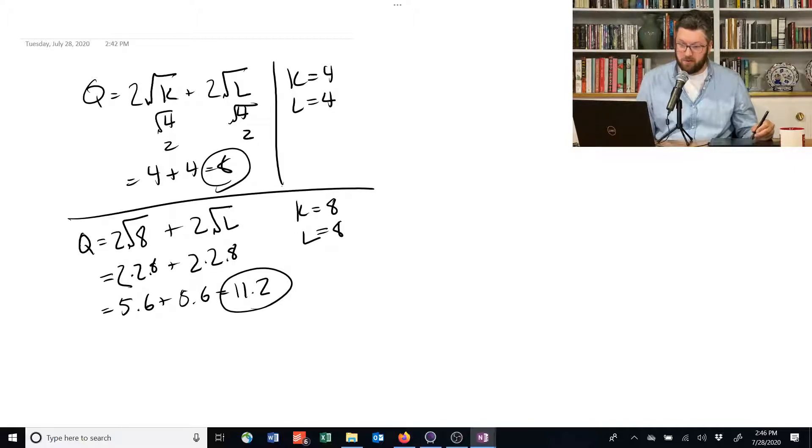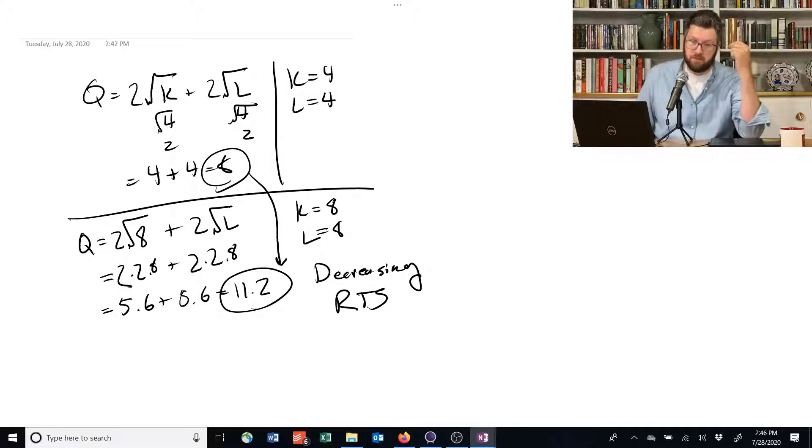The important point is that we doubled the inputs, so we went from 4 to 8. But the output only increased, well, it didn't double. If it doubled, it would have gone up to 16. So this thing has decreasing returns to scale. So that's one simple example.